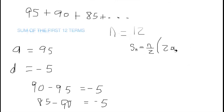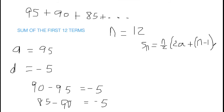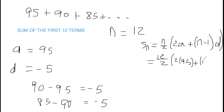The 21st term is negative 5. Now we're finding the sum of the first 12 terms. A and D remain the same. The sum formula is Sn equals N over 2, open bracket, 2A plus (N minus 1) times D. So N is 12, A is 95, and D is negative 5. Substituting: 12 over 2, open bracket, 2 times 95, plus (12 minus 1) times negative 5.